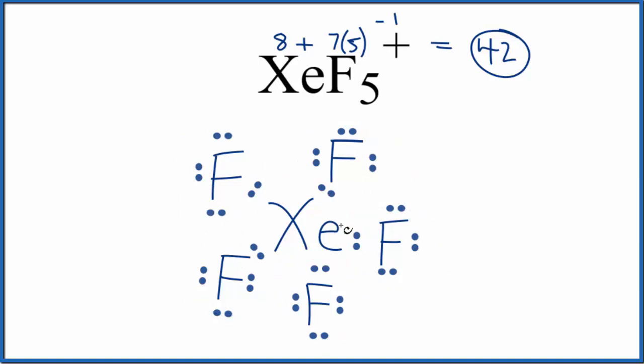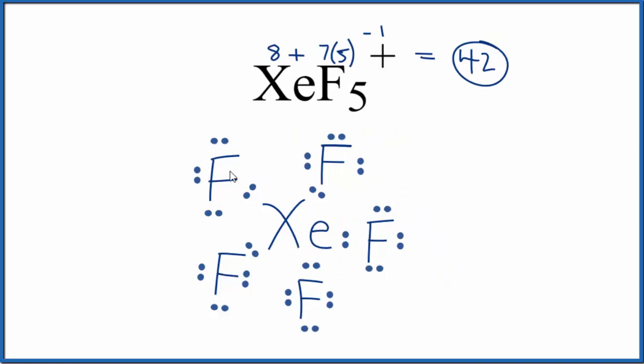That central xenon has 10. That's okay, because it can have an expanded octet. But we've only used 40 valence electrons. So we're going to take those last two valence electrons, and we're going to put them right here on the xenon.